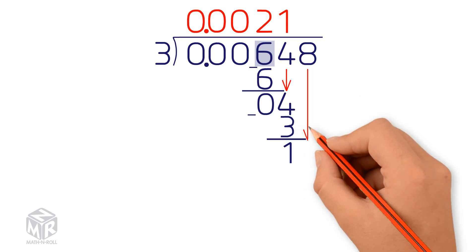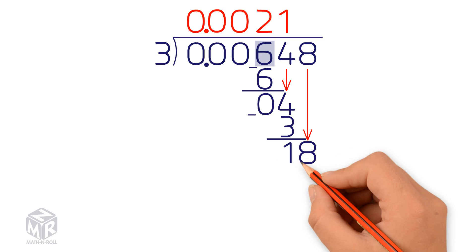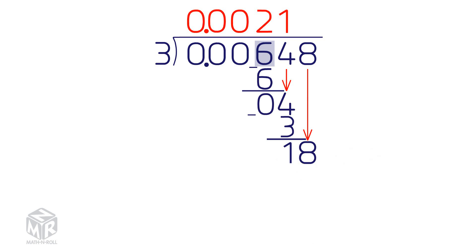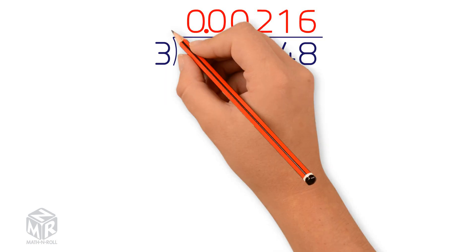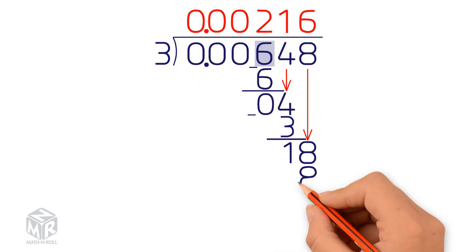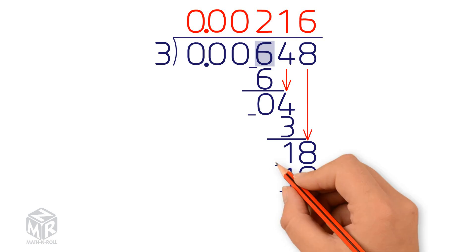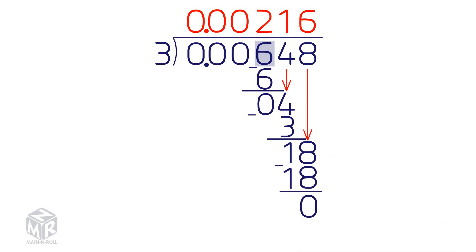Bring down the 8. Now we have 18 and we ask ourselves how many times 3 goes into 18. 3 goes into 18 6 times, so we write the 6 directly above the 8. We multiply 3 by 6 to get 18 and write it directly underneath the 18. Now we subtract and we get 0.